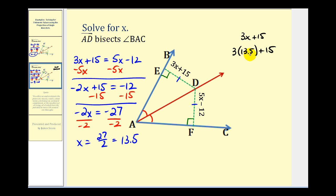Three times 13.5 is 40.5 plus 15, and 40.5 plus 15 would be 55.5. This would be the length of this green segment.